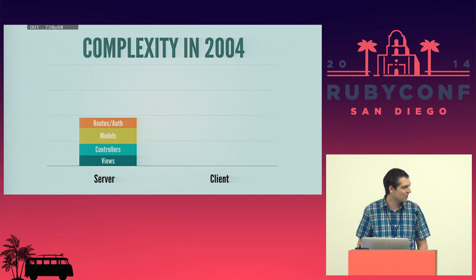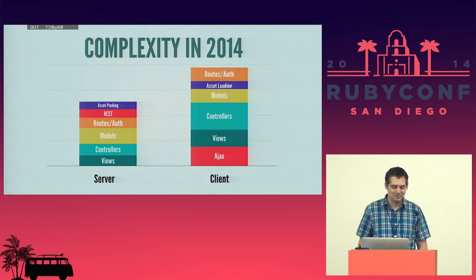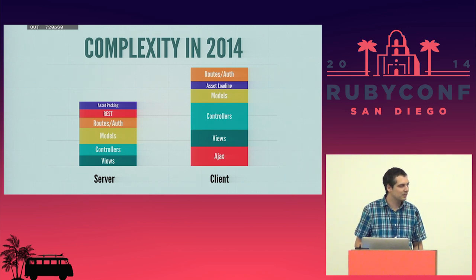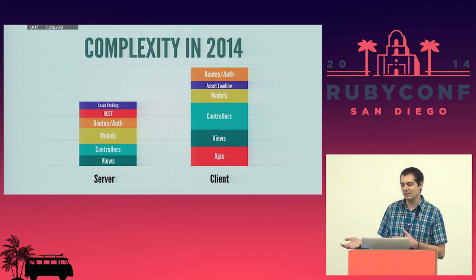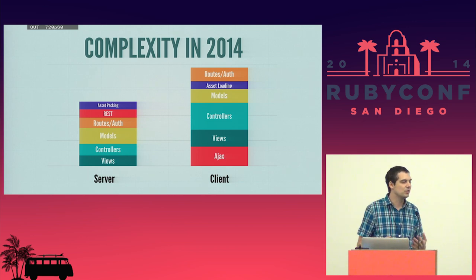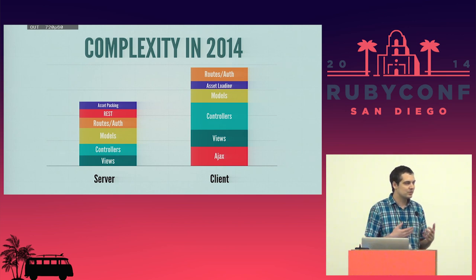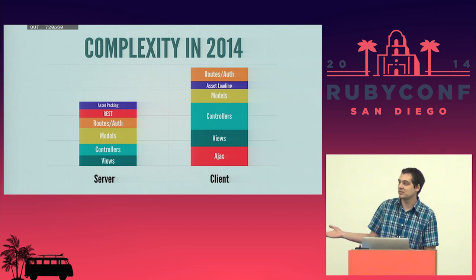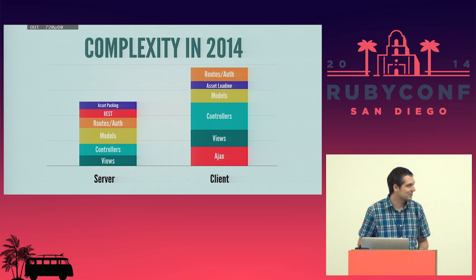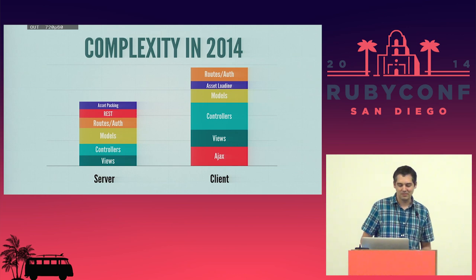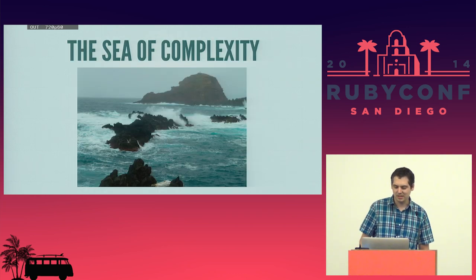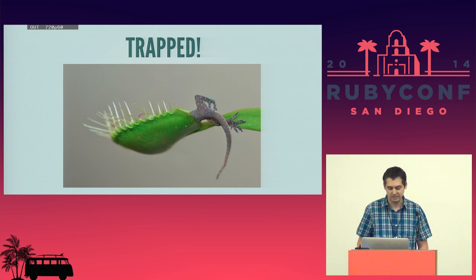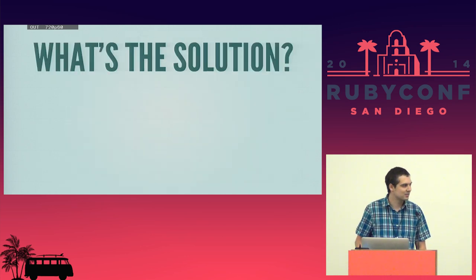In 2014, this is the situation. We can look back longingly at 2004, but we want all these features. Friends who do mobile and desktop development — people just now getting into web development — think this is crazy. And I think the reason they think it's crazy is because it is crazy. We've kind of been a frog in boiling water for a while as far as duplication and overall complexity.